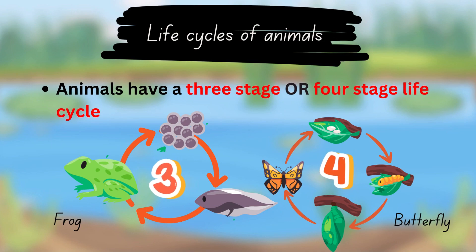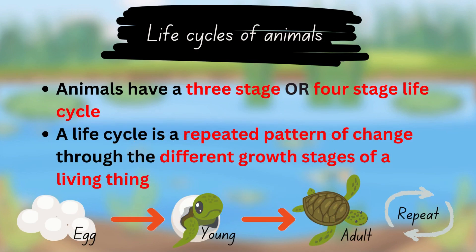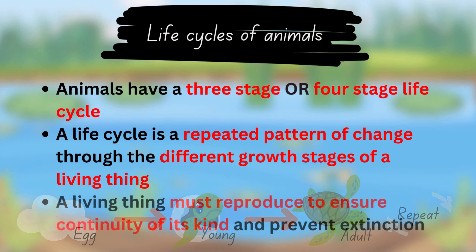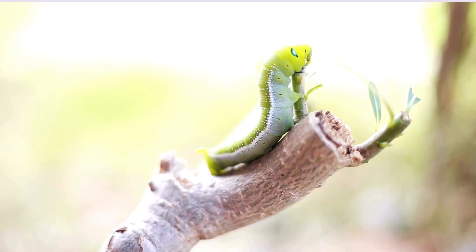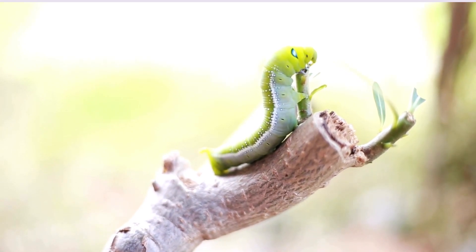Animals have a three-stage or four-stage life cycle. A life cycle is a repeated pattern of change going through different growth stages. Living things must reproduce to ensure the continuity of their kind for all ages.